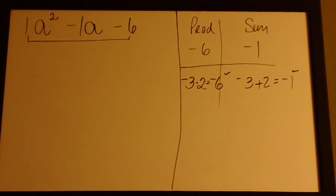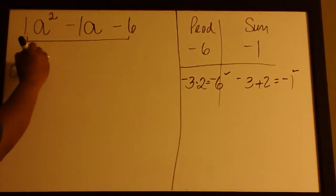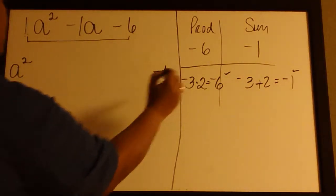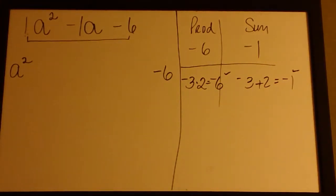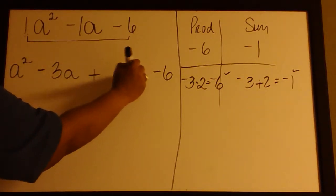I'll bring down my ends of a² and -6, and I'll fill in the middle with -3a and +2a.